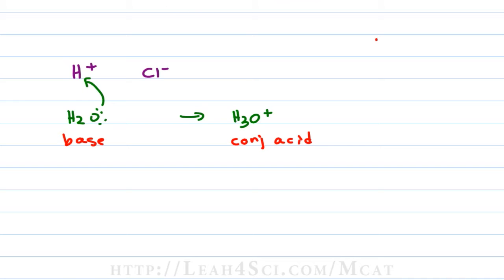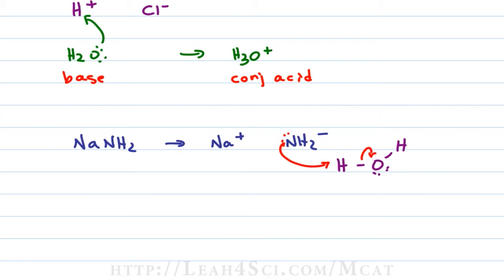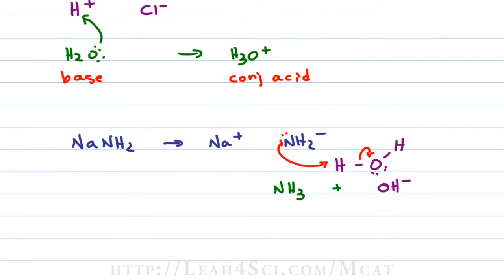Now for example, if we dissolve a strong base in water like NaNH2, this will break apart to give you Na+ and NH2-. The amide is a very strong base, and when dissolved in water, nitrogen will use one of its lone pairs to grab a hydrogen off the water molecule. That will give you NH3, ammonia dissolved in solution, plus OH-, which is a base.